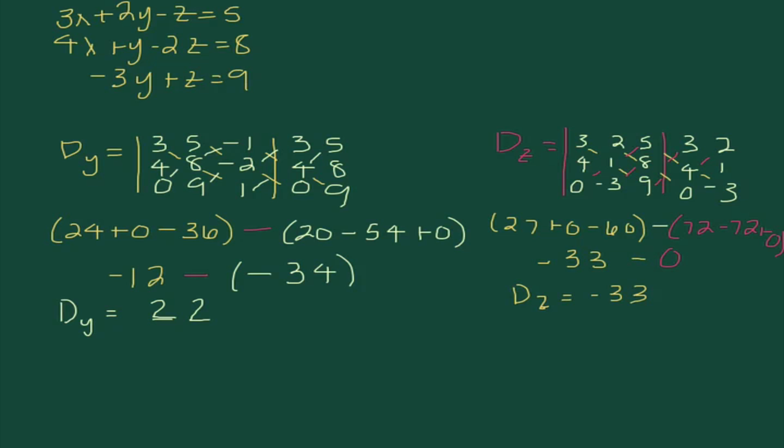So, now, let's go ahead and try and figure out all of our values. So, we know we need to do D sub X divided by D, D sub Y divided by D, and D sub Z divided by D. So, I'm going to go ahead and do negative 44 divided by negative 11. 22 divided by negative 11, and negative 33 divided by negative 11. And, I'm going to write my answer up here because I have room. And, I end up getting 4, negative 2, positive 3.